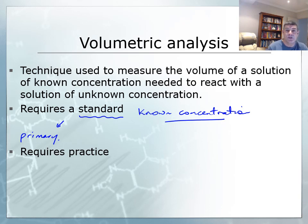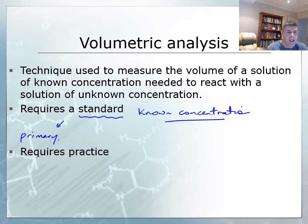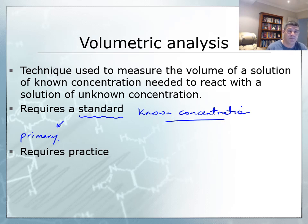One substance used very commonly in acid-base titrations is sodium hydroxide. Now, sodium hydroxide does come in pellet form, but its molar mass is just 40, and it's very, very unstable. The pellets themselves will absorb moisture from the atmosphere, and this will change the concentration of the solution and continue to do so even after you've made the solution. So this is not a primary standard, but it could be standardized — that is, it could be a secondary standard.